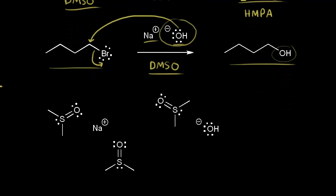We have sodium hydroxide here. Let's focus on the sodium cation. DMSO is a good solvator of cations because the oxygen has a partial negative charge and the sulfur has a partial positive charge. The lone pairs of electrons on the oxygen help to stabilize the positive charge on our sodium. So the fact that a polar aprotic solvent is a good solvator of a cation means we can separate the ion from our nucleophile, and that increases the effectiveness of the hydroxide ion.